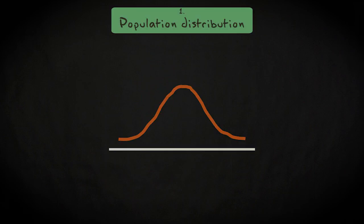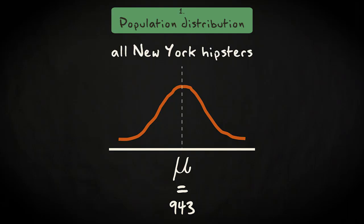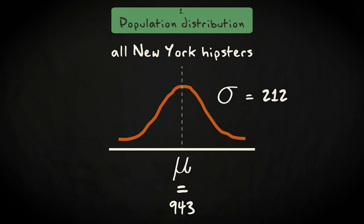Three distributions are of importance here. The first one is the population distribution. It is approximately bell-shaped. The mean is 943 — meaning that if we add up the On the Road reading times of all New York hipsters and divide by the total number of New York hipsters, we get 943 minutes. The population mean is symbolized by mu. The standard deviation in the population, symbolized by sigma, measures the variability of all individual reading times around the mean, and equals 212 minutes.